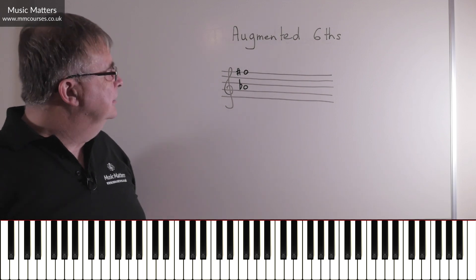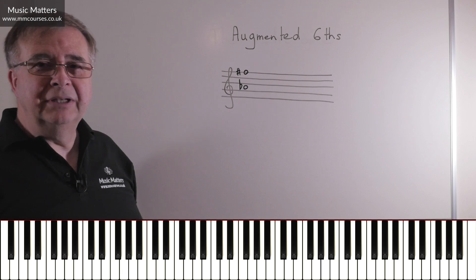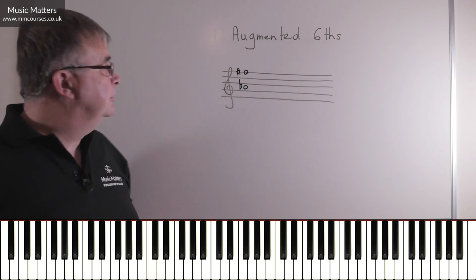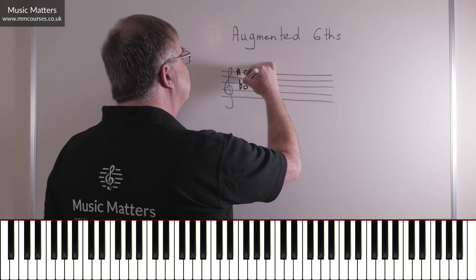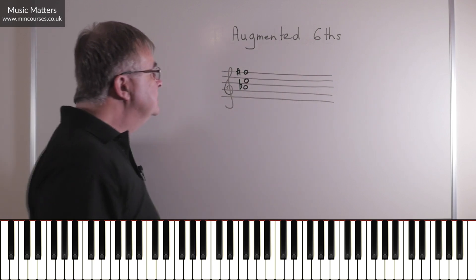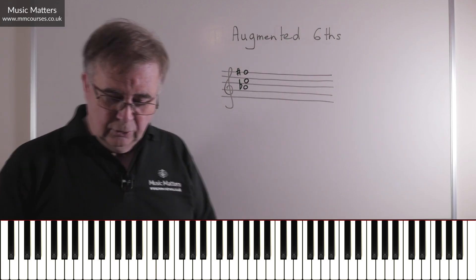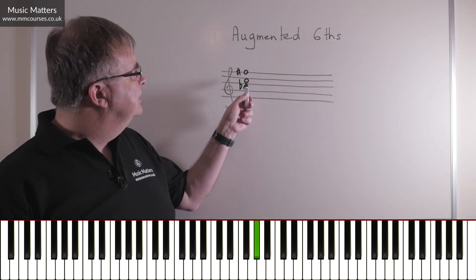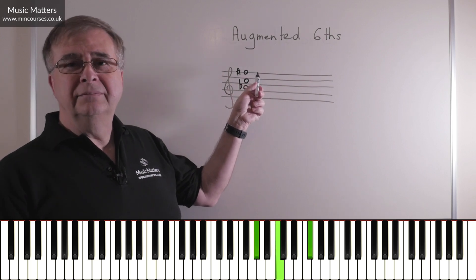Step three: put the tonic in the middle. We're in C major, therefore the tonic is C. That gives me the basis of an augmented sixth chord: A-flat, C, F-sharp.